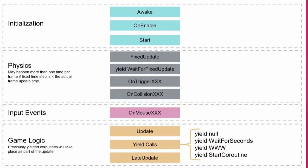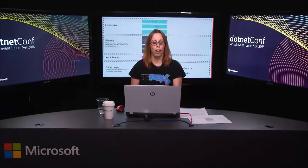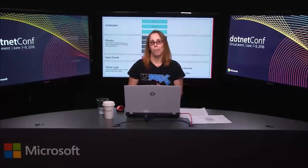The last section is game logic. We have Update, yield calls feeding into coroutines, and LateUpdate. The key thing about Update is it's frame-rate dependent. Frame rate depends on how physics-intensive your game is, the computer's performance, and the video card. An older card might get lower frame rates while a newer one gets more frames per second — it's somewhat unpredictable. That's why you'd do physics in FixedUpdate: it's more predictable.